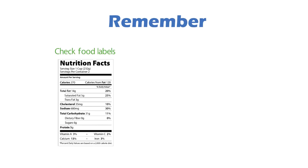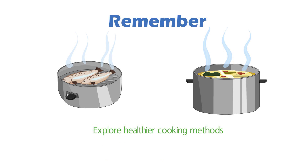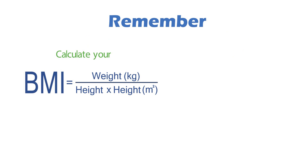Always remember to check the food label on sections such as total fats for more information. Pick products with the healthier choice symbol, as these products are often lower in fats compared to similar products. Explore healthier cooking methods such as steaming, boiling, stewing or even air frying. Try to achieve and maintain your body mass index within the healthy range of 18.5 to 22.9. BMI is a measure of the relationship between your weight and height to estimate the amount of body fat you have — generally, the higher your BMI, the higher the amount of fat in your body.